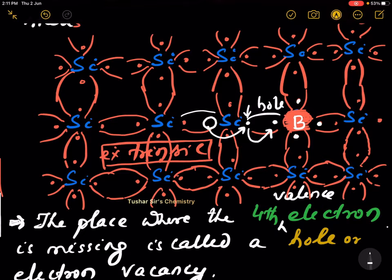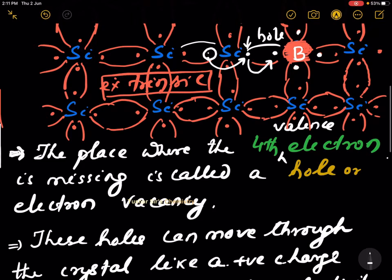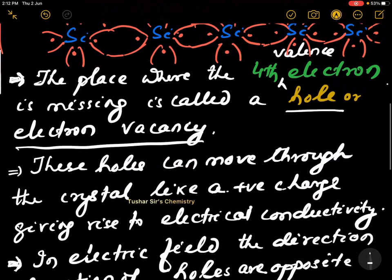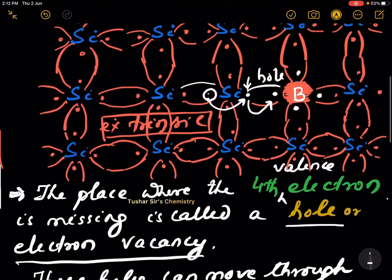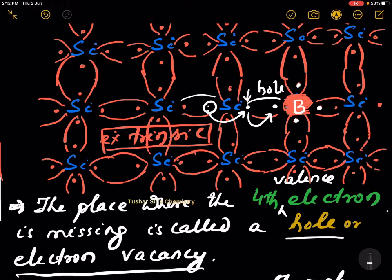So, movement of electrons is opposite to the flow of holes. The place where the fourth valence electron is missing is called a hole, or you can say electron vacancy. These holes can move through the crystal like a positive charge, giving rise to electrical conductivity. When these holes are filled with electrons, the electron will miss this position and a hole is created over here. So, holes are moving in this way and electrons are moving in this way.